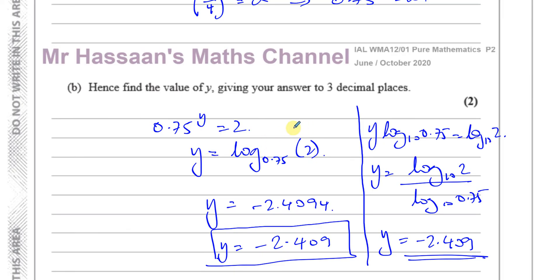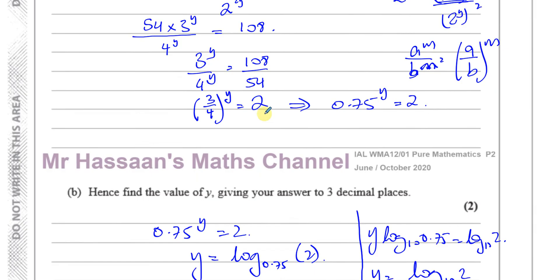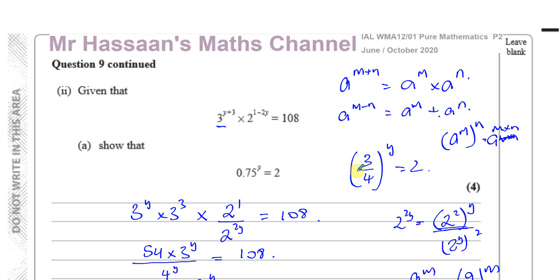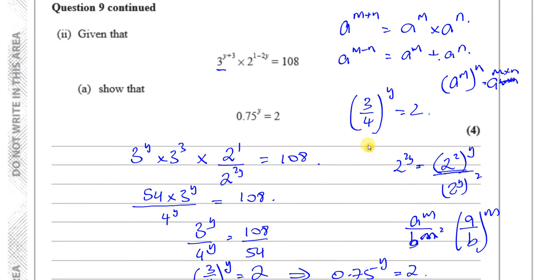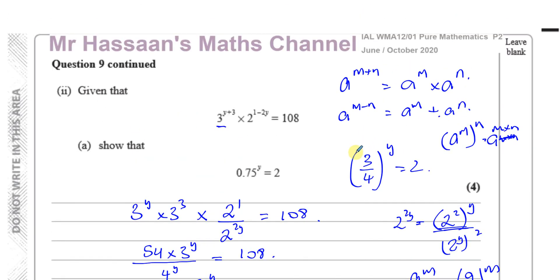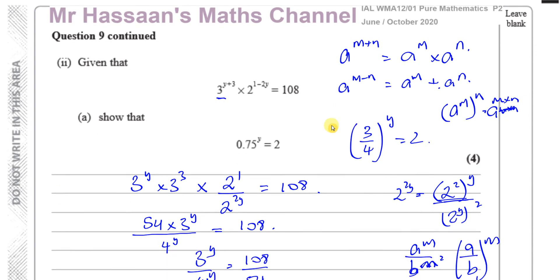There is the answer to question 9 part b, and that is the end of the paper. We've completed this June/October 2020 paper. You can find the playlist for all the other questions in the description of this video, along with links to the question paper in PDF format and its mark scheme, as well as other syllabuses — P2, P3, P4, M1, S1. I hope you found this useful and I wish you well for your exams. Thank you for watching and see you soon.